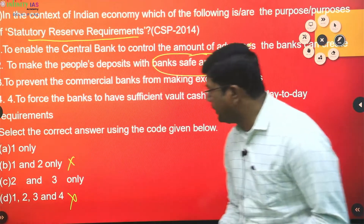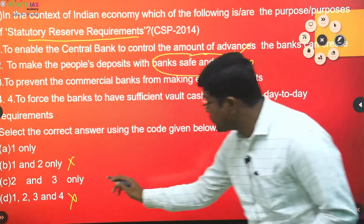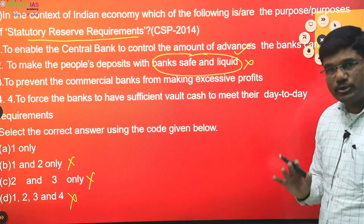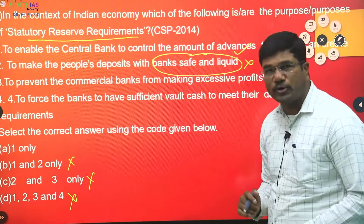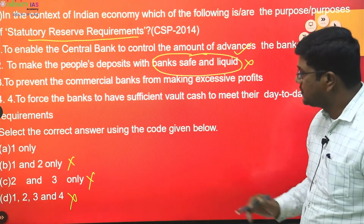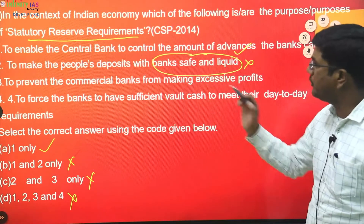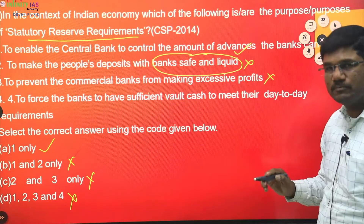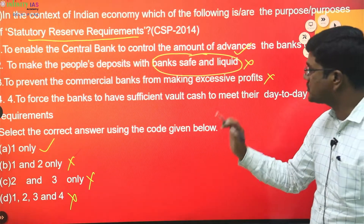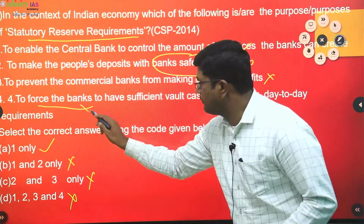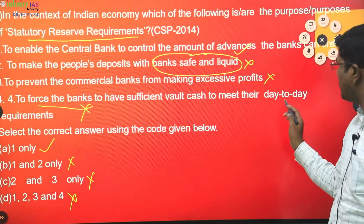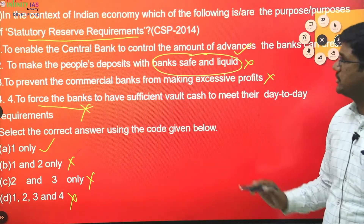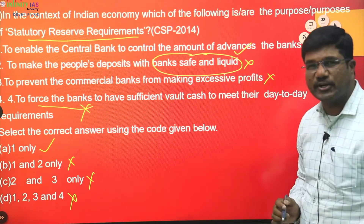Using the elimination method, you can arrive at option A. Always keep in mind that the elimination technique is quite important for solving MCQs in prelims. Option three — to prevent commercial banks from making excessive profit — also doesn't make sense. Option four — to force the bank to maintain sufficient cash to meet day-to-day requirements — RBI never forces. So there is only one answer, that is answer A.